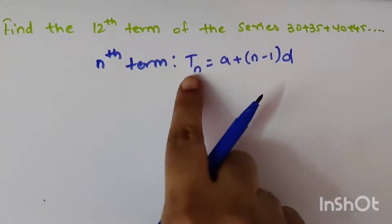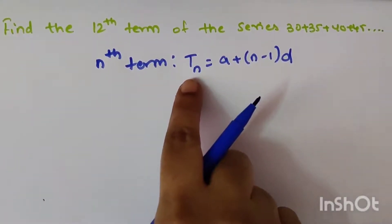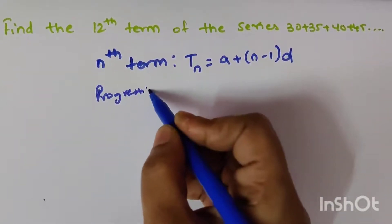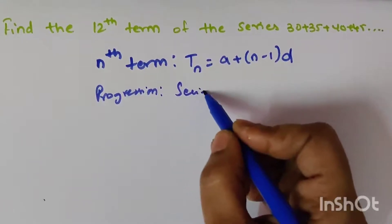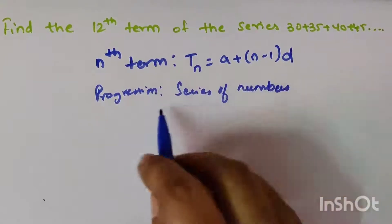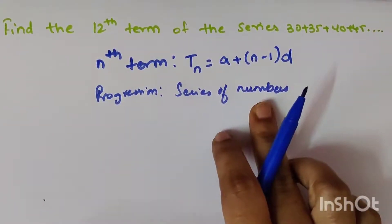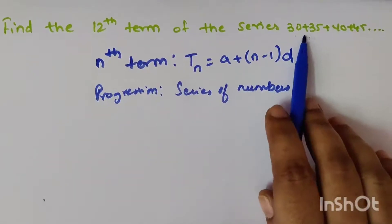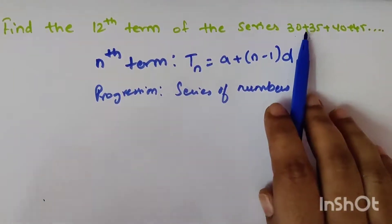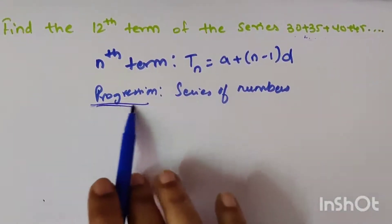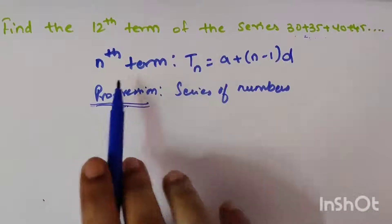Before solving this problem, I want to tell you what progression actually means. Progression is nothing but a series of numbers arranged in some sequence. For example, here we have 30, 35, 40, 45 — there is a difference of 5 between each term. That series is called a progression.